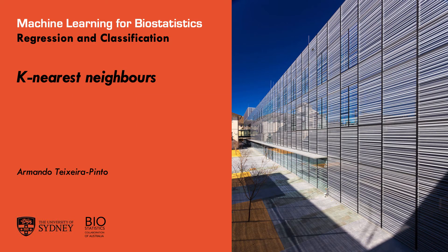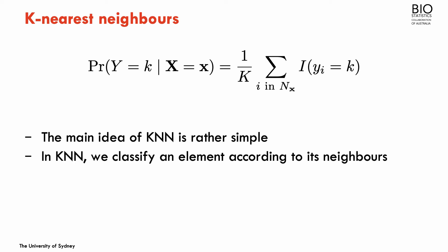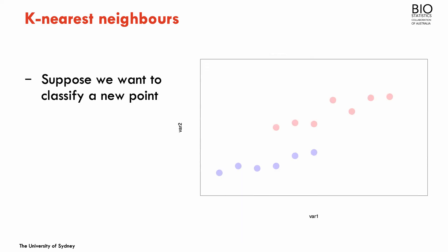I will now present the last classification method in this module: the k-nearest neighbors. I'll be using the same dataset as before, the bone mineral density dataset, where the objective is to predict fracture based on other covariates. Here we want to estimate the probability of each category of the outcome, and the main idea of k-nearest neighbors is rather simple — we're going to classify each element according to the categories of its neighbors.